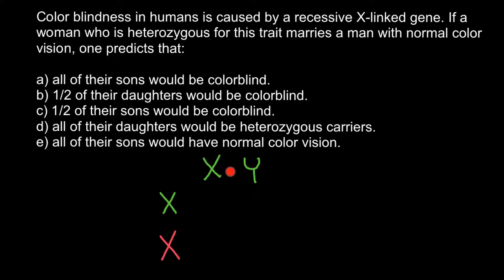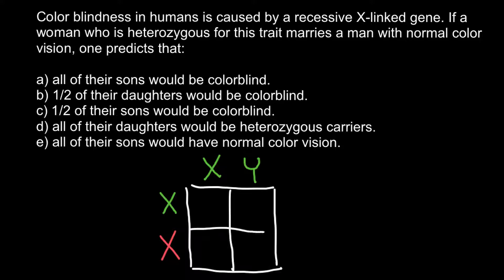The single X chromosome of the male would be normal. When we build a Punnett square, we can predict phenotypes and genotypes of the progeny. According to this Punnett square, we have two normal X chromosomes here, a normal X and Y chromosome here, a defective X chromosome paired with a normal X chromosome — the defective inherited from the mother's side and normal from the father's side.